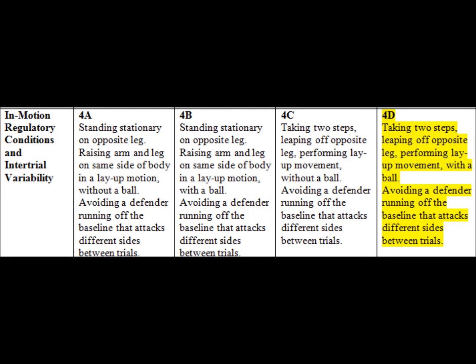4D is the final stage in Gentile's Taxonomy and is the most difficult skill category. It involves body transport, object manipulation, in-motion regulatory conditions, and intertrial variability. The progression from 3C involves the addition of the ball and the defender being unpredictable. This is very close to a game situation.